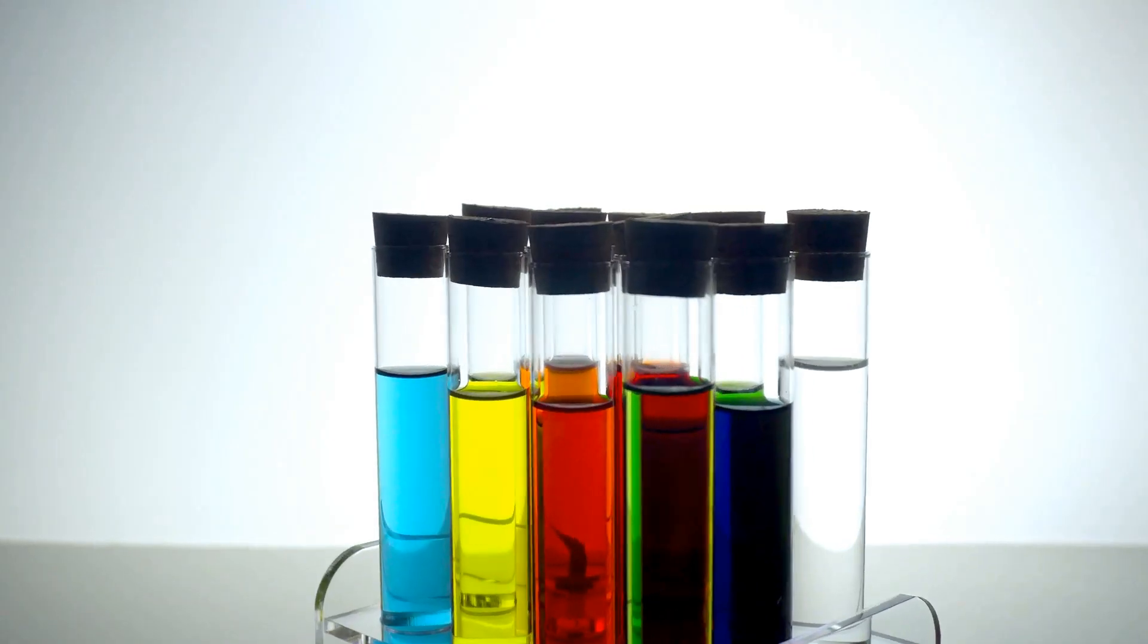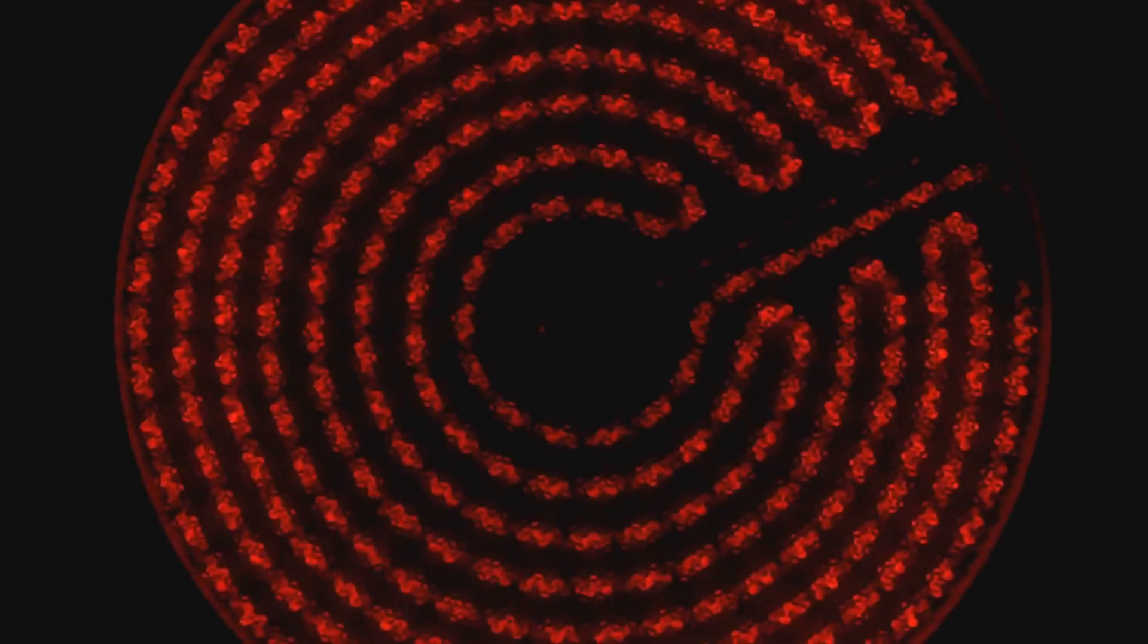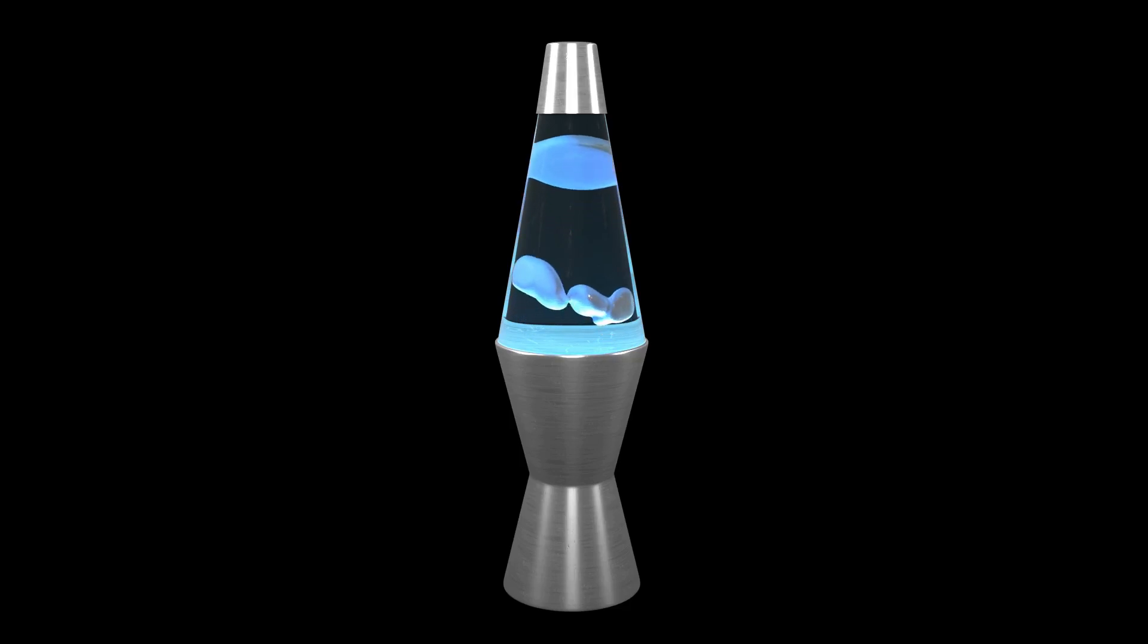Heating element: This little guy provides the heat that makes the whole thing go. The heating element is what causes the wax to melt and rise, creating the lava lamp effect. Base: This holds everything together and usually houses the light bulb. The base is the foundation of the lamp, providing stability and housing the heating element. It's the unsung hero that makes the magic happen.